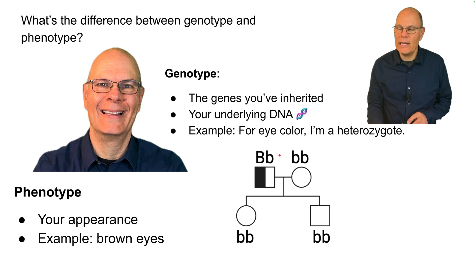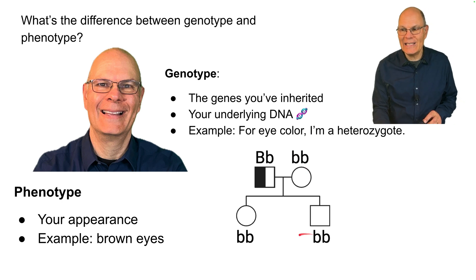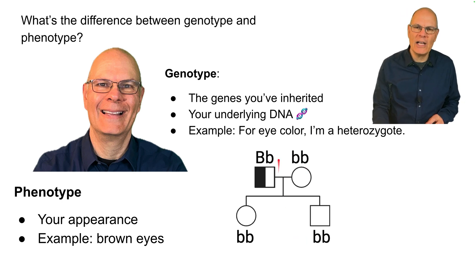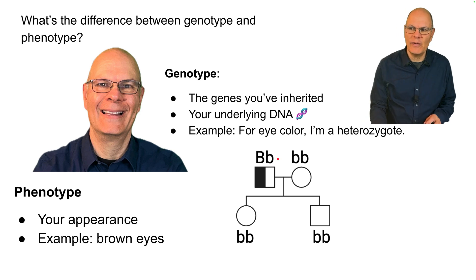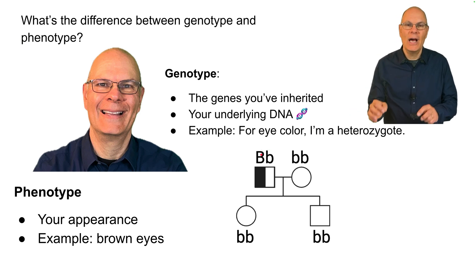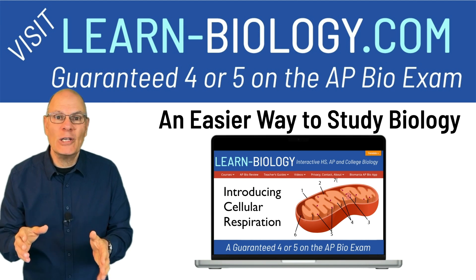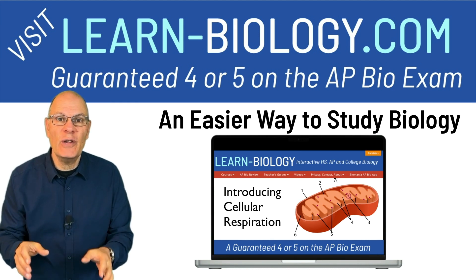How do I know that? Because my wife has blue eyes, and both of my kids have blue eyes, and that would only be possible if I were a heterozygote. If I were a homozygote, I could only pass on the big B allele, and then both of my children would have been heterozygotes.